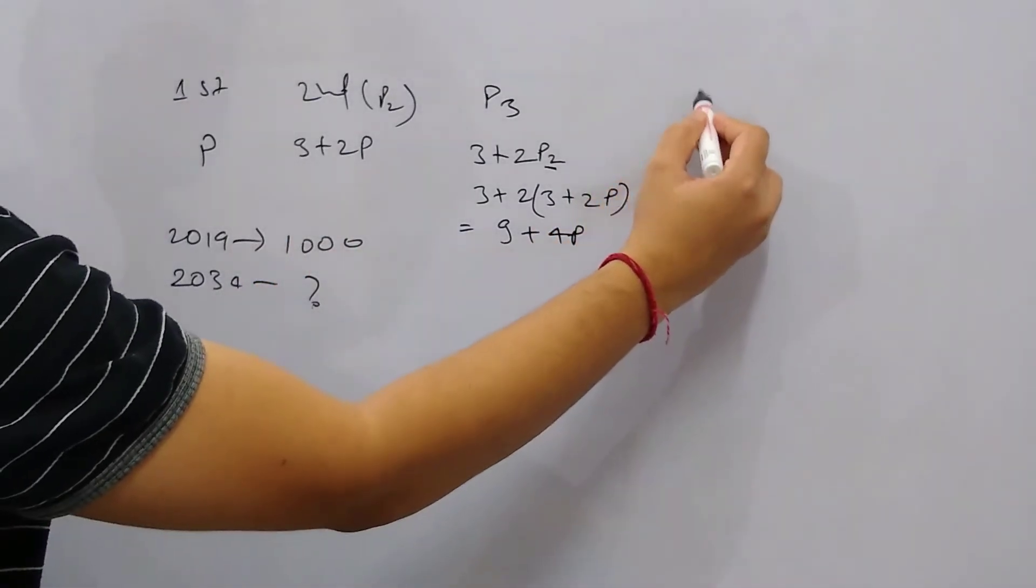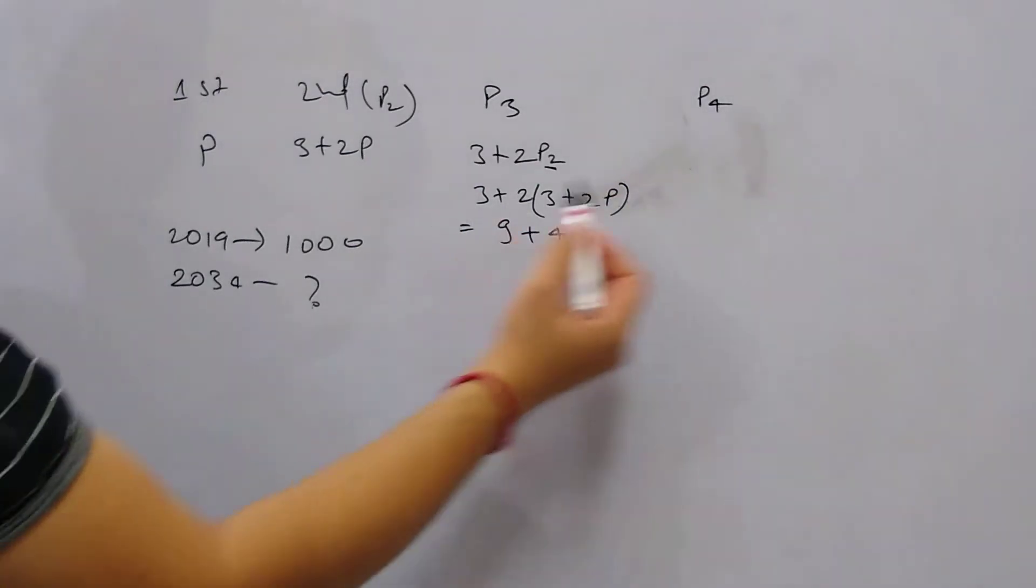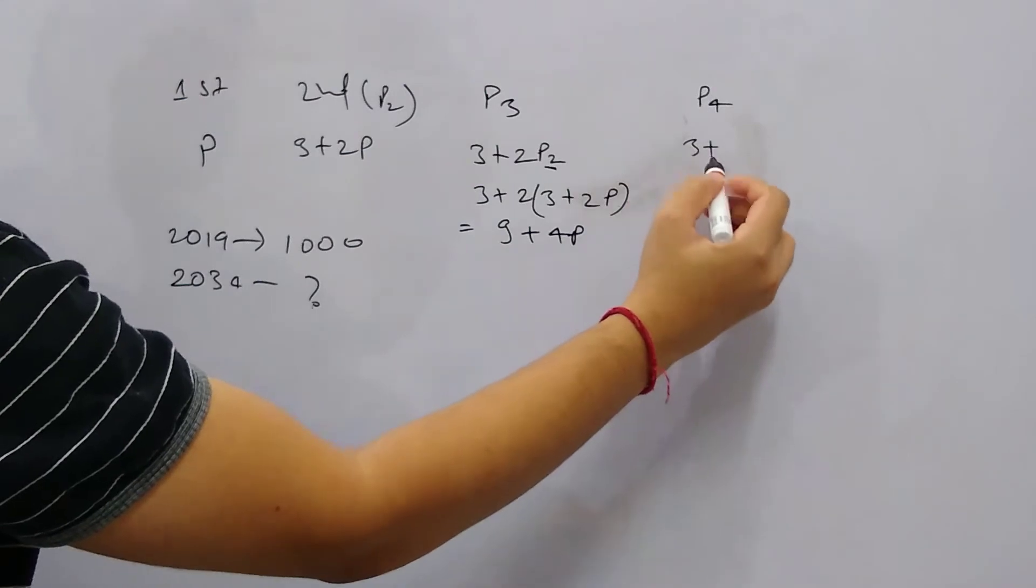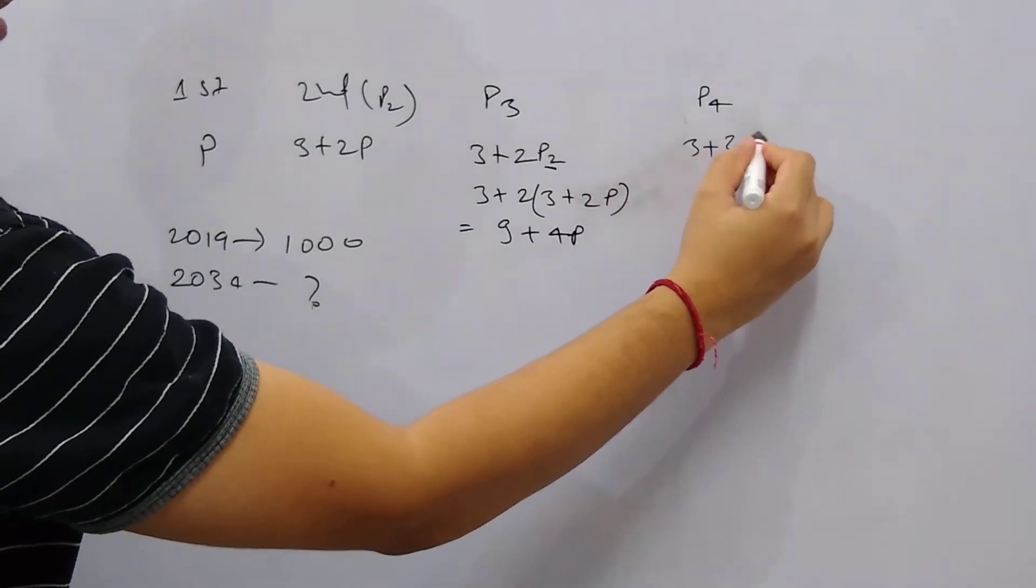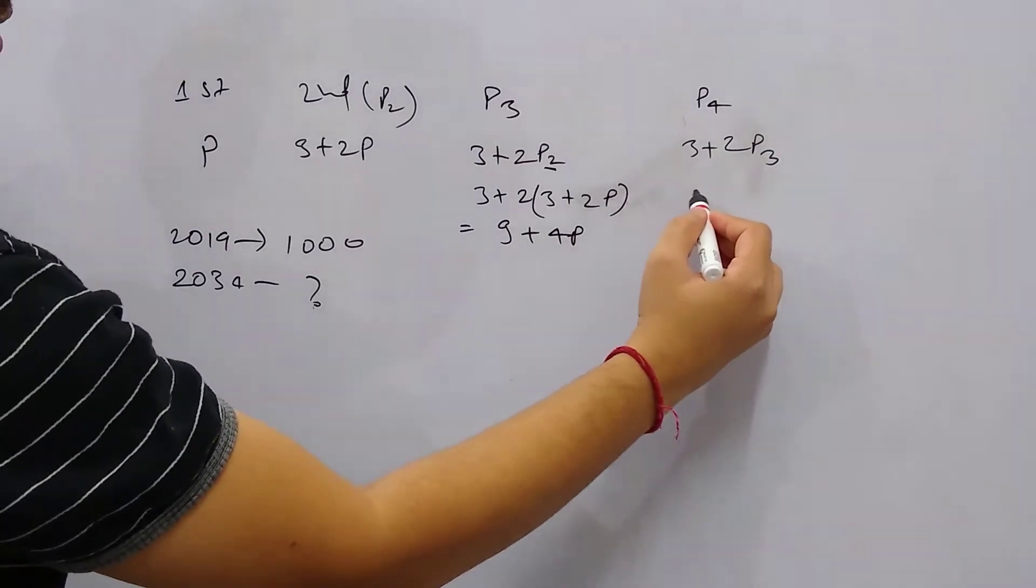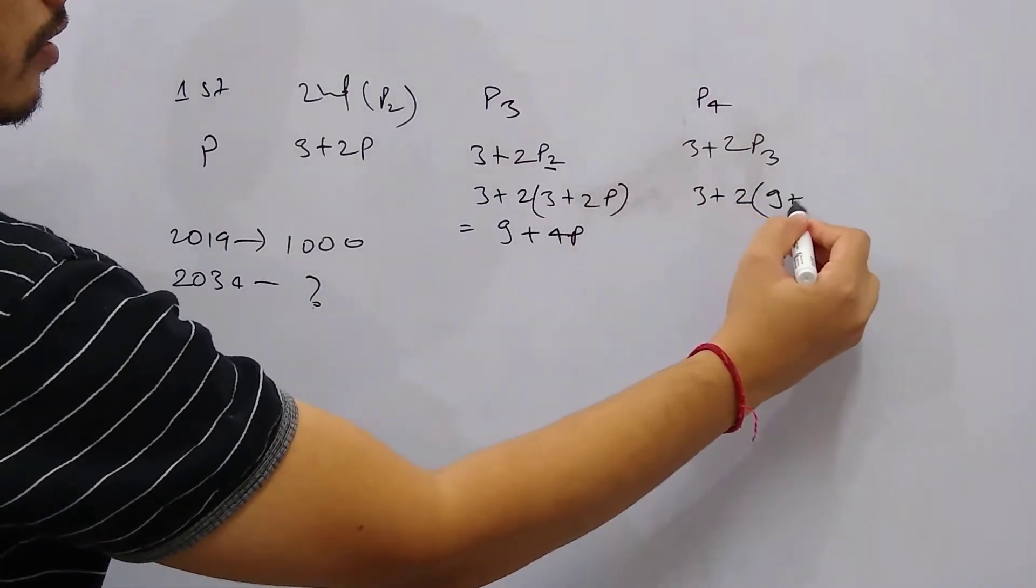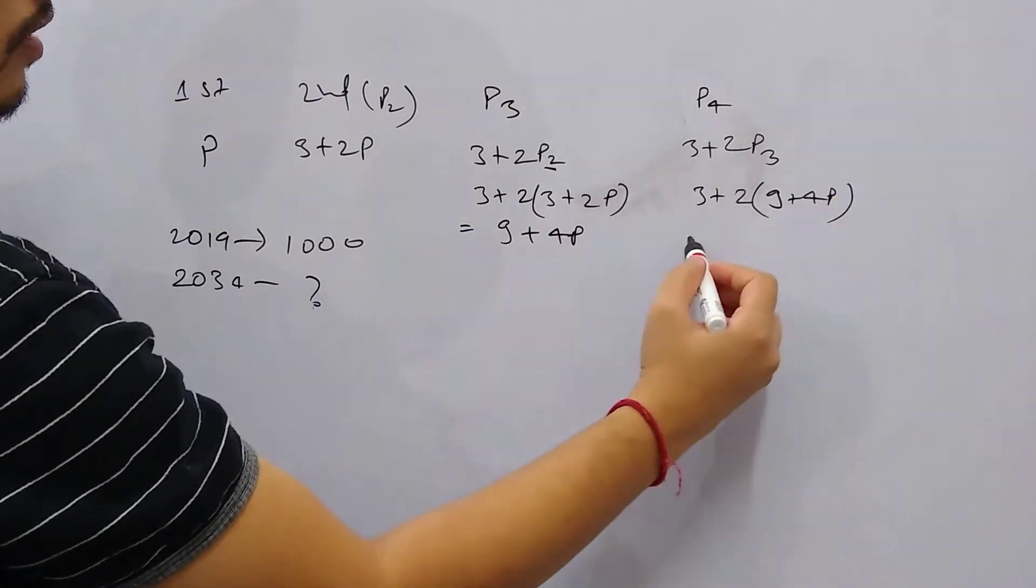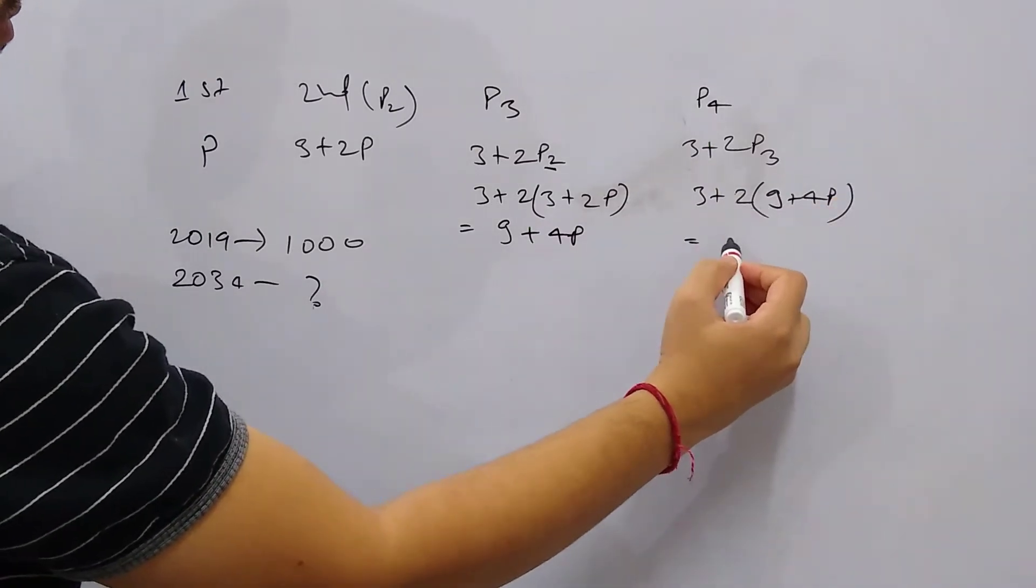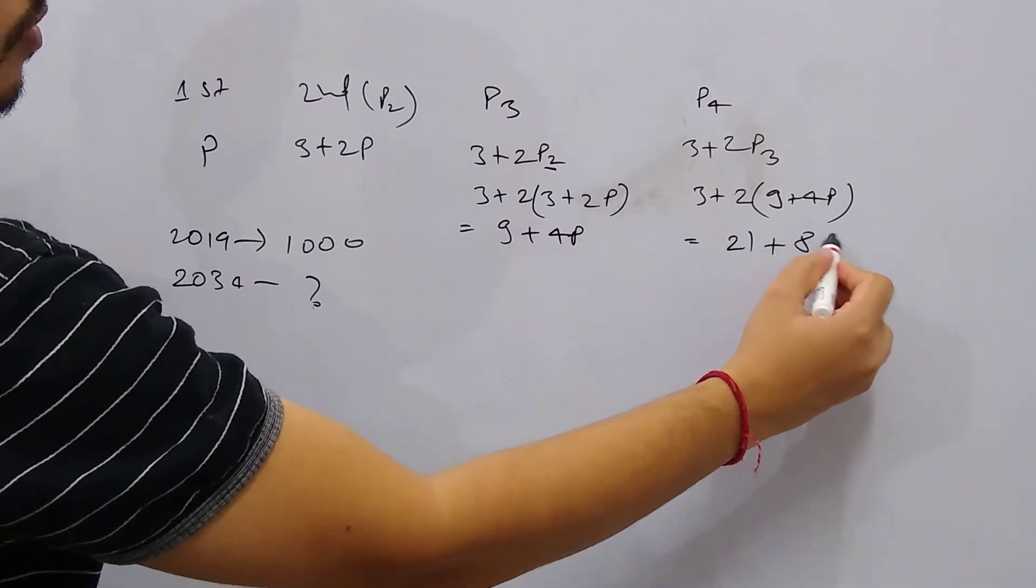So population in fourth year or p4 will be 3 + 2p3. And here it's 3 + 2(9 + 4p), or it's 21 + 8p.